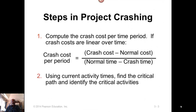The first step in crashing is to compute the crash cost per time period for each activity. The formula is: crash cost minus normal cost divided by the difference in time — that is, normal time minus crash time. This ratio gives us the crash cost per period.